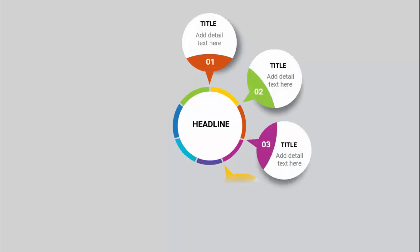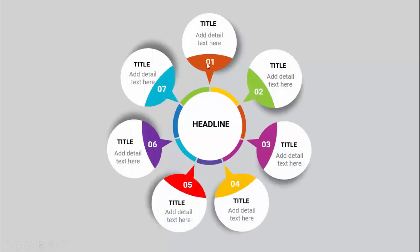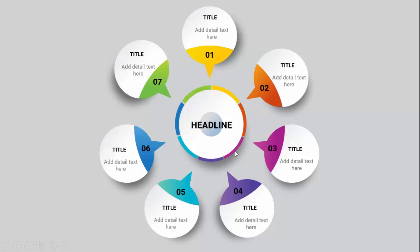In today's tutorial I'm going to show you how to create a seven circular options infographics slide in PowerPoint. When I click, the first headline comes — you can add the headline here — and the first title comes. You can see option number one with different color combinations, the title and the detail text. You can add it likewise, using different colors for the remaining options. I have also created one more slide that is somewhat bigger and wider.